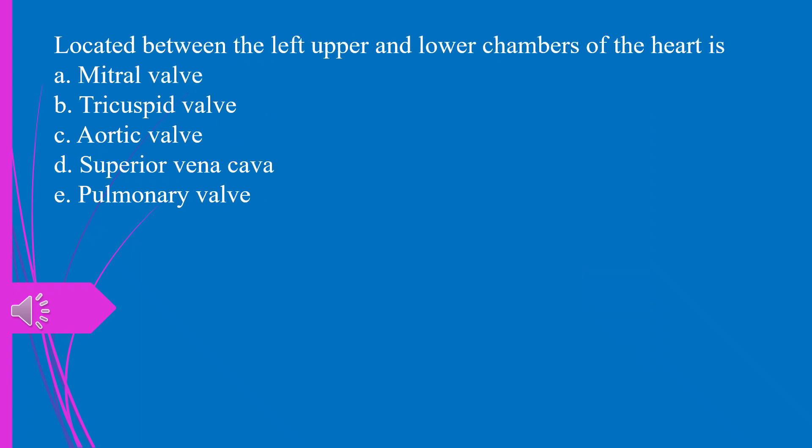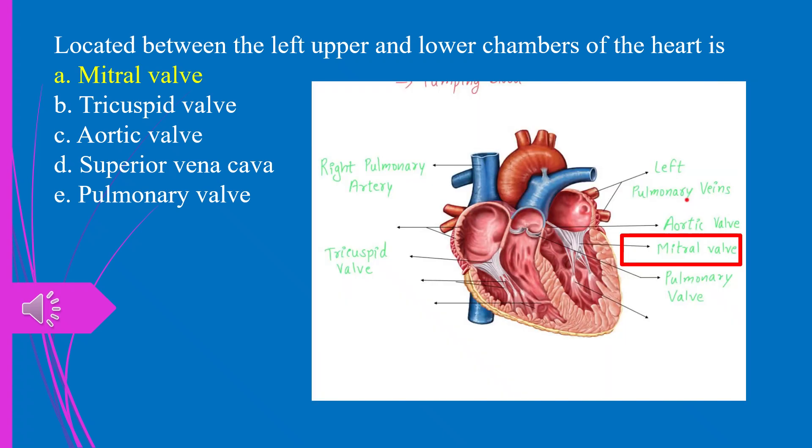Located between the left upper and lower chambers of the heart is, A. Mitral valve. B. Tricuspid valve. C. Aortic valve. D. Superior vena cava. E. Pulmonary valve. The answer is A. Mitral valve.